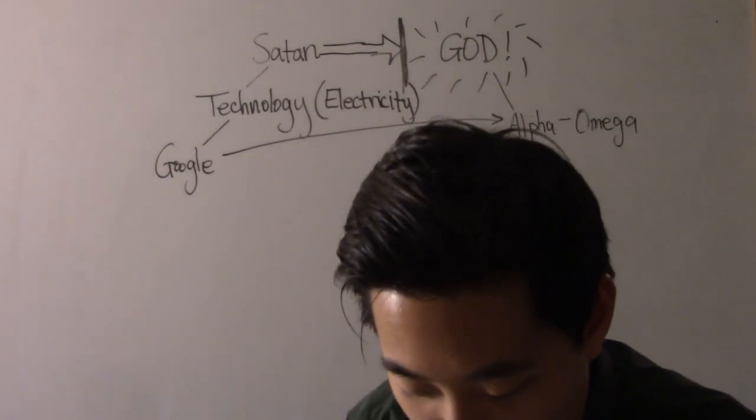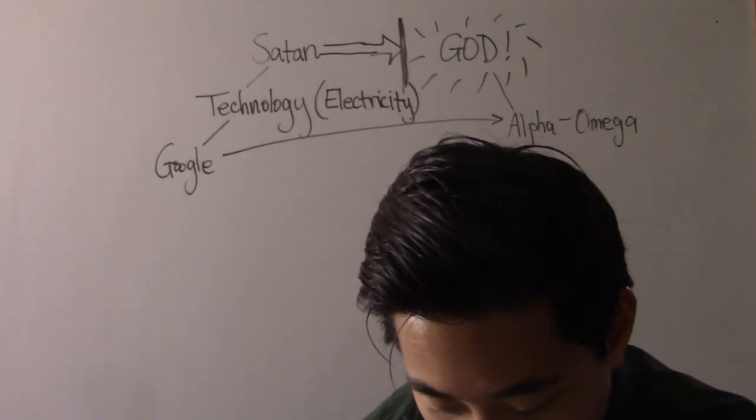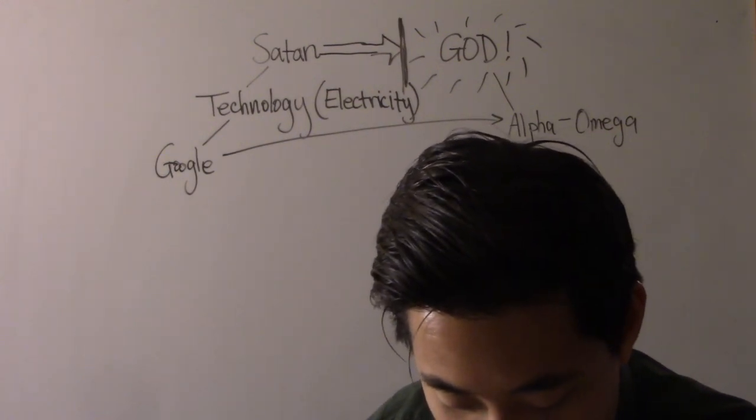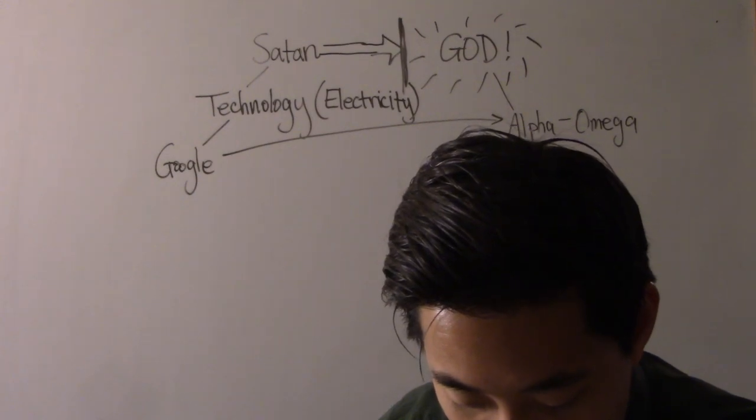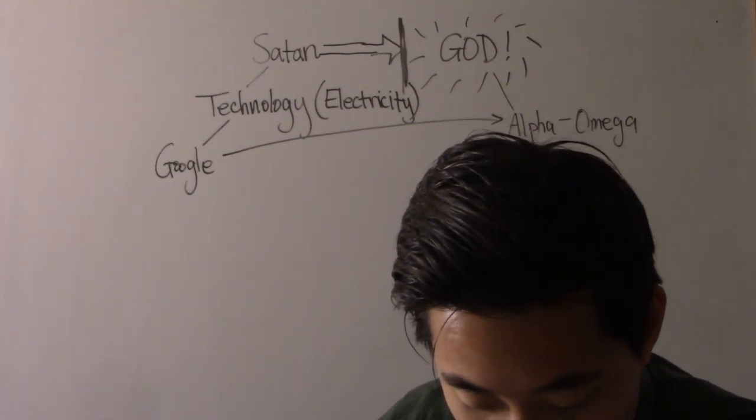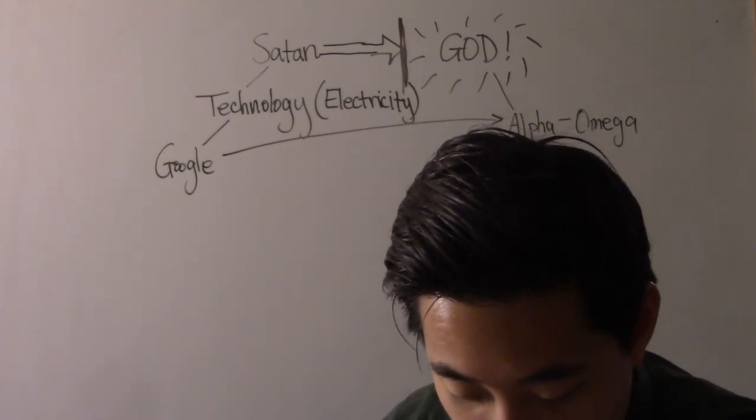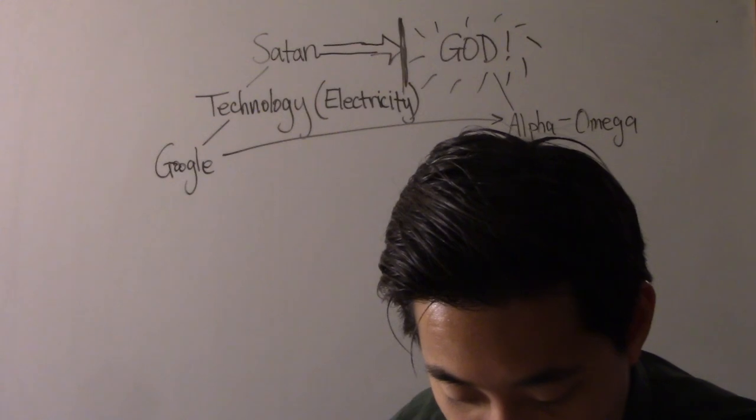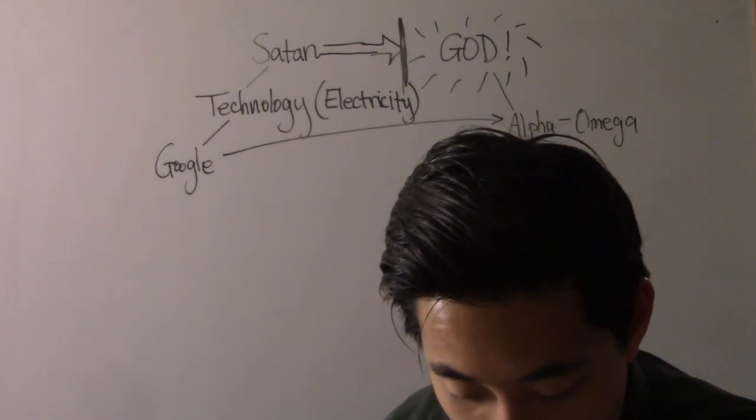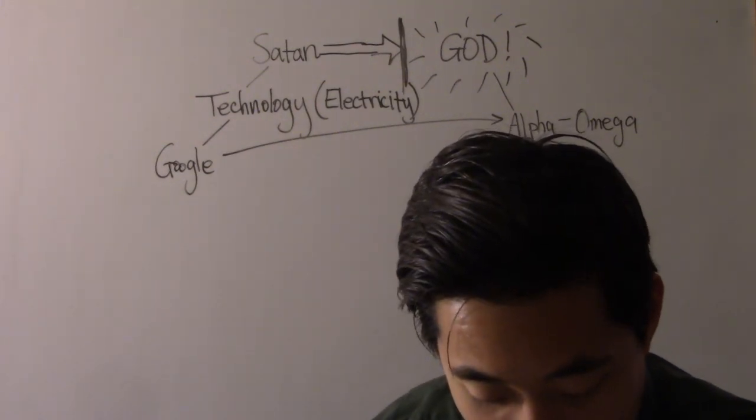Look at Revelation chapter 1. And notice what God calls himself, that he is Alpha and Omega, the beginning and the end. We'll notice right here in verse 17. And when I saw him, I fell at his feet as dead. And he laid his right hand upon me, saying, Unto me fear not. I am the first and the last.